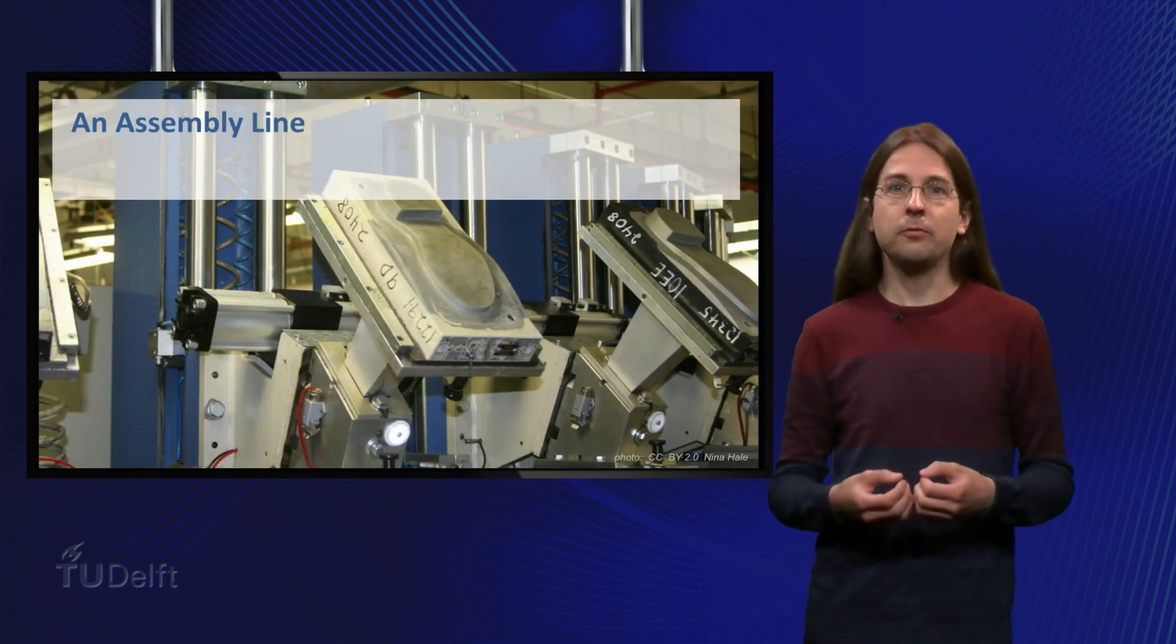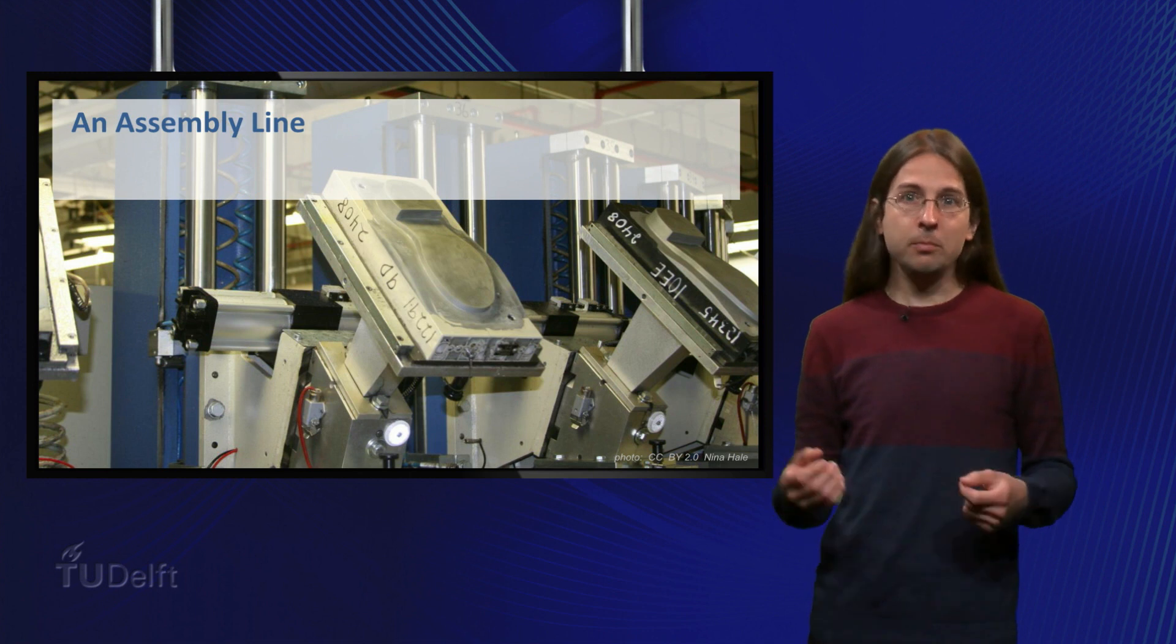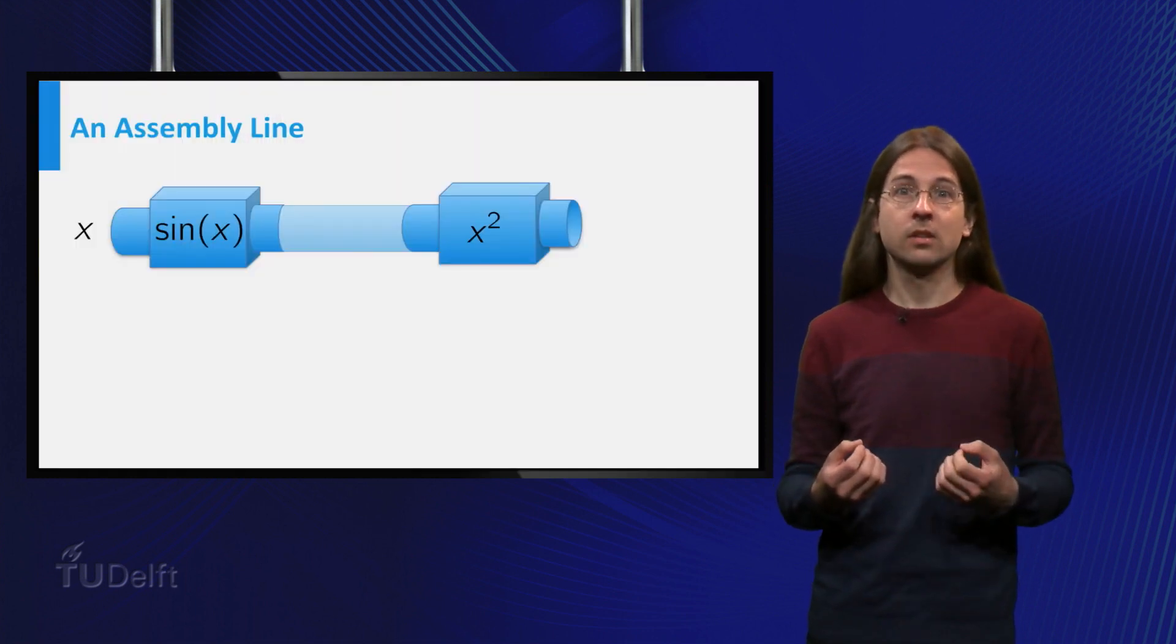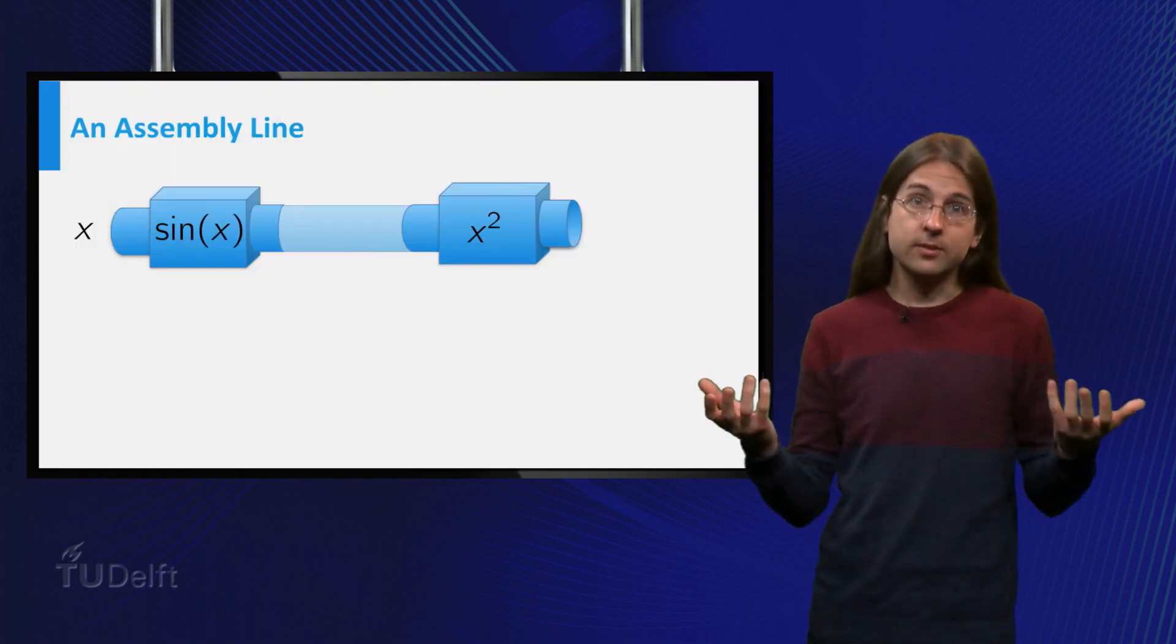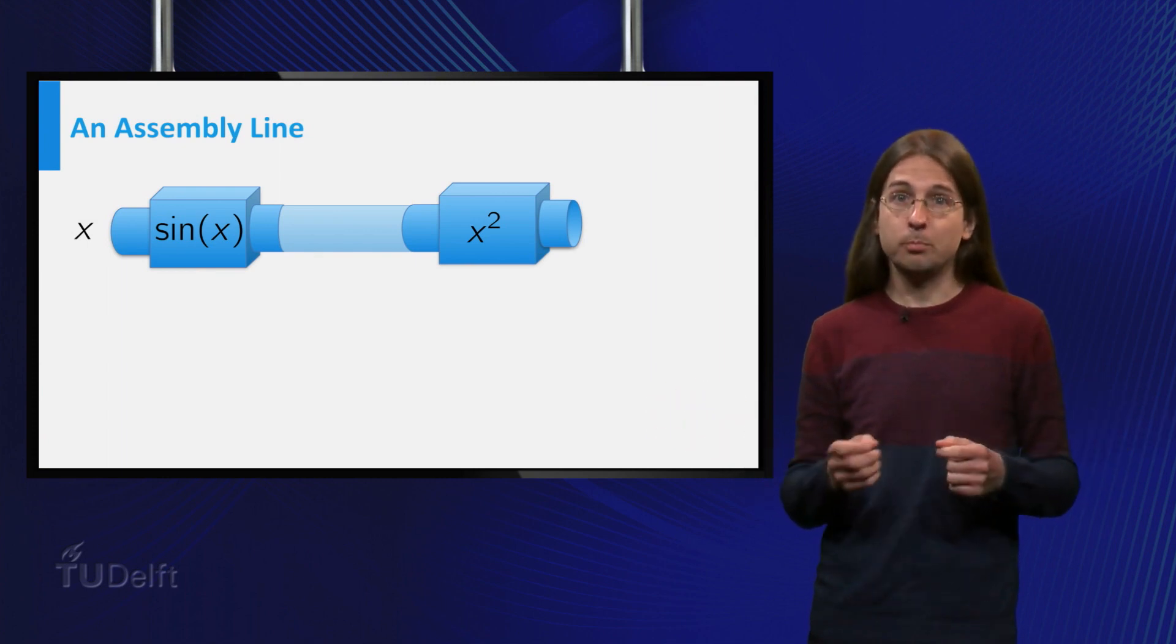If you consider a function to be a machine, with inputs on the left and outputs on the right, a composed function is akin to an assembly line. We take two functions, let us say sine and square, and put them in a line.